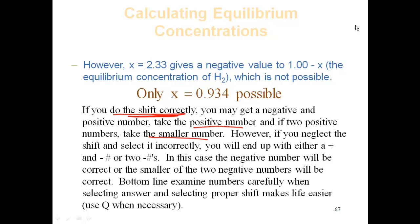However, if you neglect shift or do it incorrectly, then you're going to get a positive and a negative number and two negative numbers. In this case, what's going to happen is it's going to be the negative number when you get a negative positive number, or it's going to be the smaller negative number if you get two negative numbers.